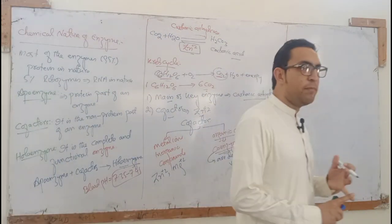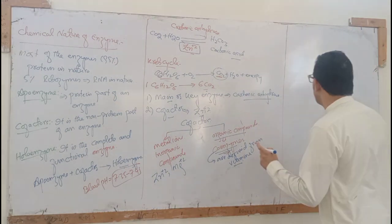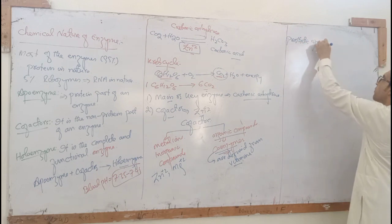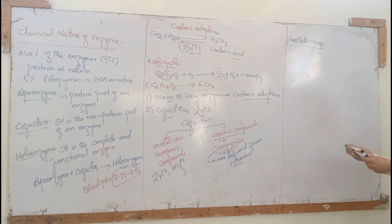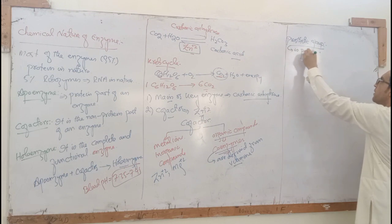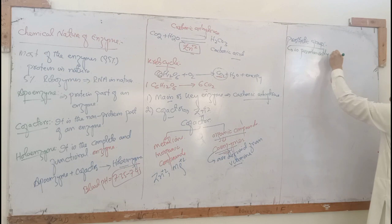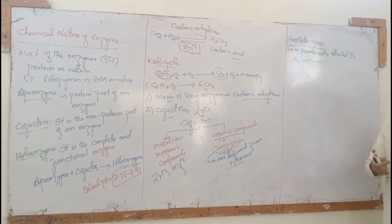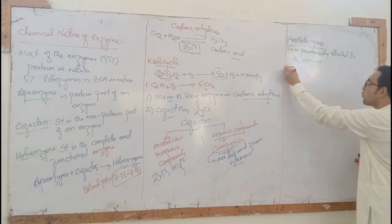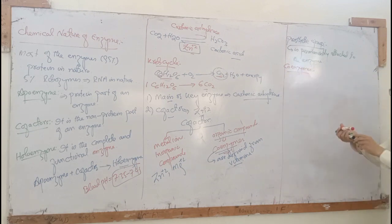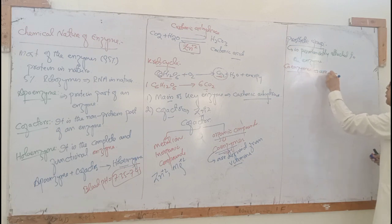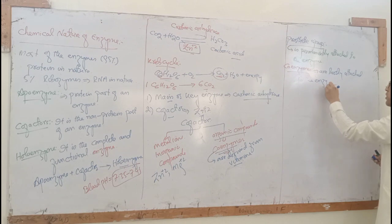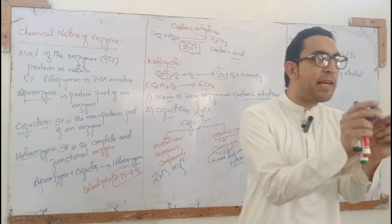Cofactors can be of two types: one is metal ions, and the other is organic compounds. Within organic compounds, there are two types: coenzymes and prosthetic groups. A prosthetic group is permanently attached to the enzyme, while a coenzyme is loosely attached to the enzyme.